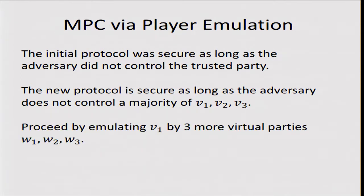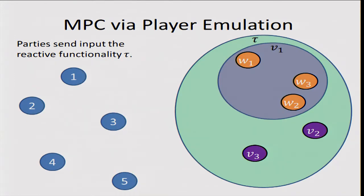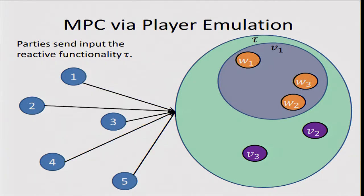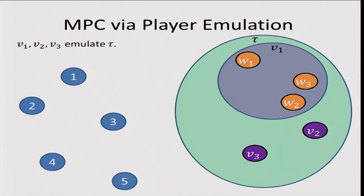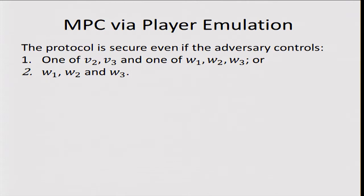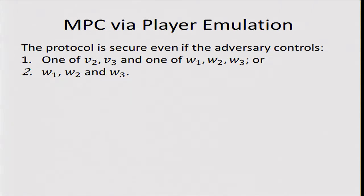We proceed by emulating V1 with three additional players W1, W2, and W3. The actual players are now the original five, plus W1, W2, and W3 emulating whatever V1 did, alongside V2 and V3. Even if all of W1, W2, and W3 are corrupt, this corresponds to only V1 being corrupt, which was acceptable in the previous protocol. Alternatively, even if V2 or V3 is corrupt and one out of W1, W2, W3 is corrupt, we're still okay — so we're getting something non-trivial.